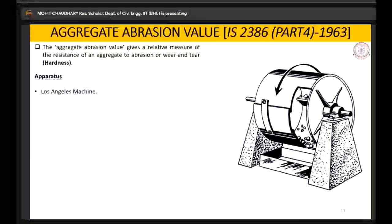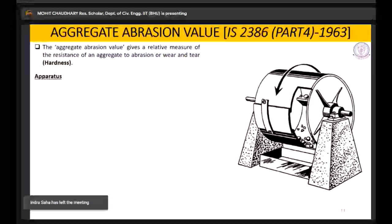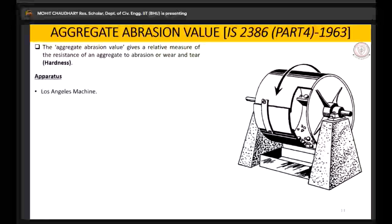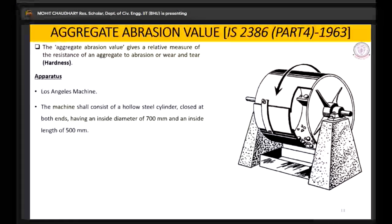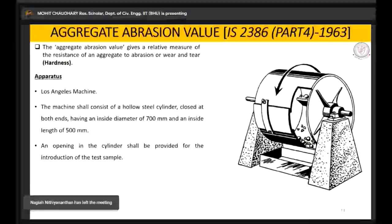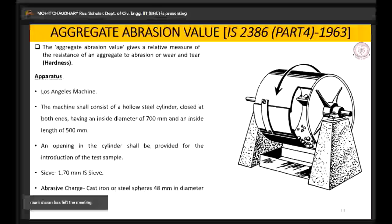The apparatus which we need - there are two types of abrasion test: Los Angeles abrasion test and Deval abrasion test. The most popular one is Los Angeles abrasion test. The first apparatus is this abrasion machine, which is basically a hollow steel cylindrical drum closed at both ends. It has inside diameter of 700 mm and inside length of 500 mm. There are two bolts here to unscrew it to fill the material inside. We will also be needing a sieve of 1.7 mm.